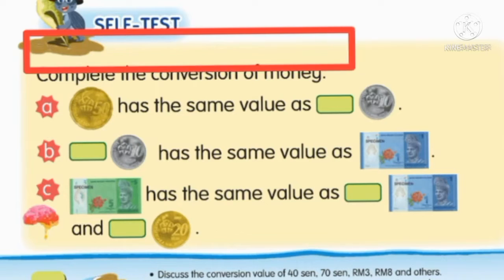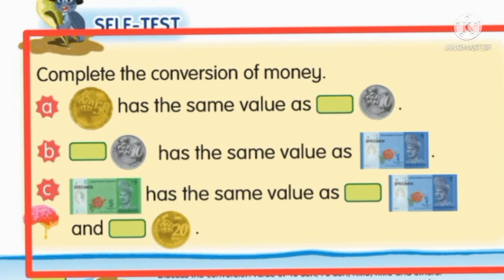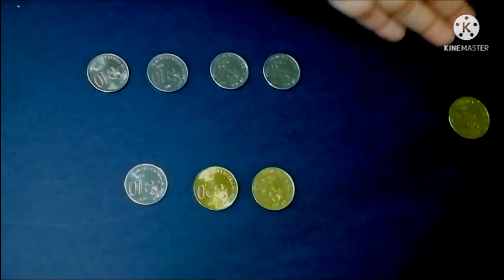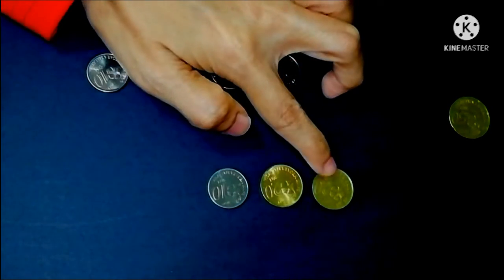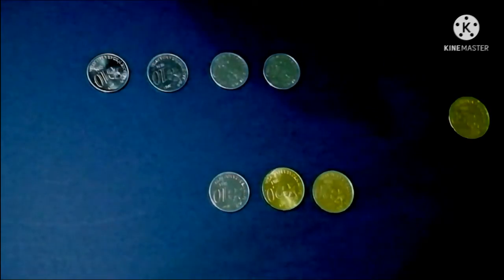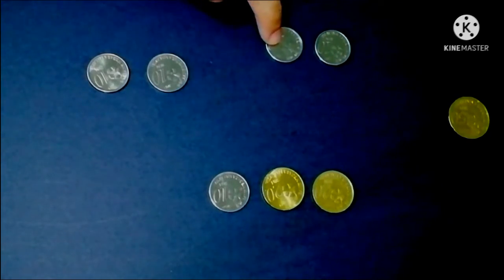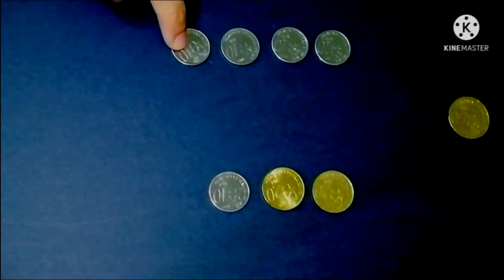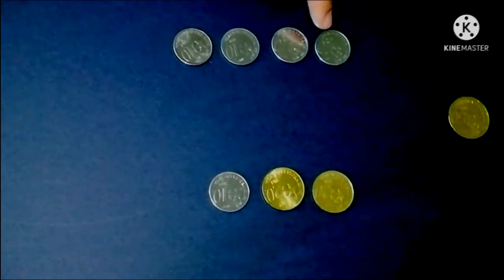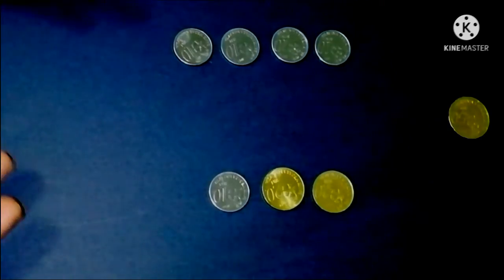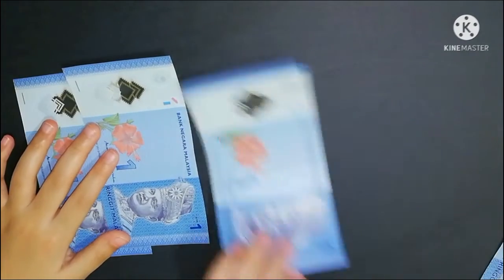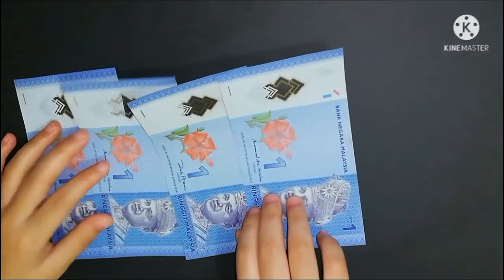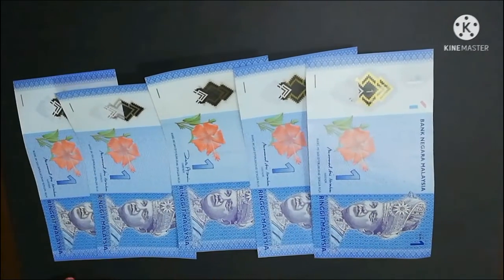Now you can test yourself by answering this question. Which one is the combination of 50 cents? Here we have 20 cents, 20 cents, and 10 cents. 20 cents, 20 cents, and 10 cents is 50 cents. Then here we have four 10 cents equal to 40 cents. So which one is equal to 50 cents? This is 5 ringgit.